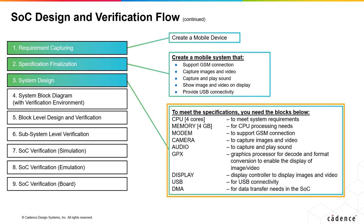The third step is system design, where we need to select hardware devices or blocks required to meet the specifications finalized in the second step. This selection is based on experience and device specs, and can be refined during design or testing. For the mobile example, we need a CPU with four cores, an associated memory block of at least four gigabytes, a modem for GSM connectivity, a camera for images and video, audio for capturing and playing sound, a GPU and display for image and video processing, USB for USB connectivity, and a DMA for data transfer across the SOC.